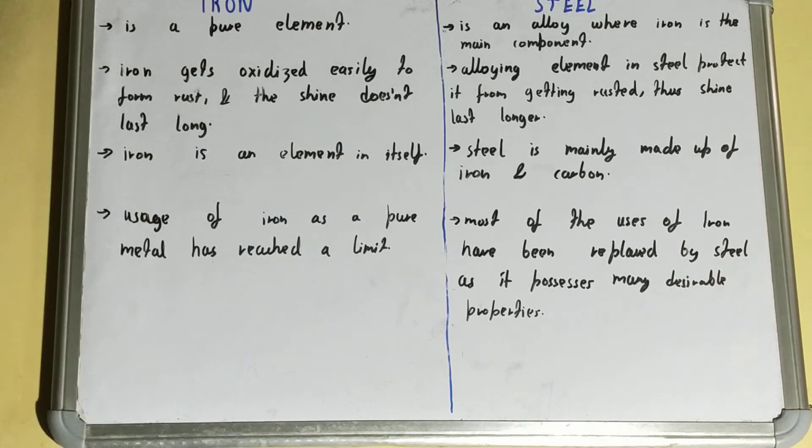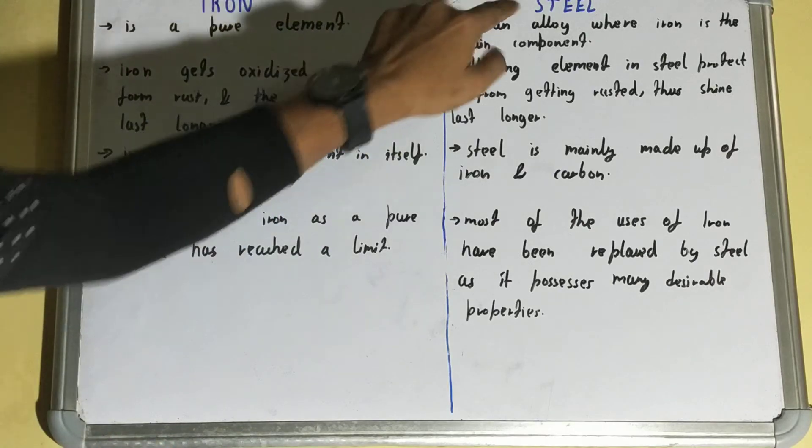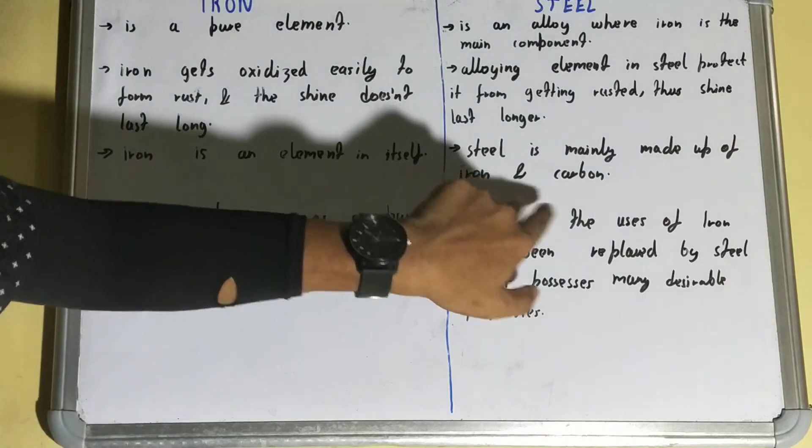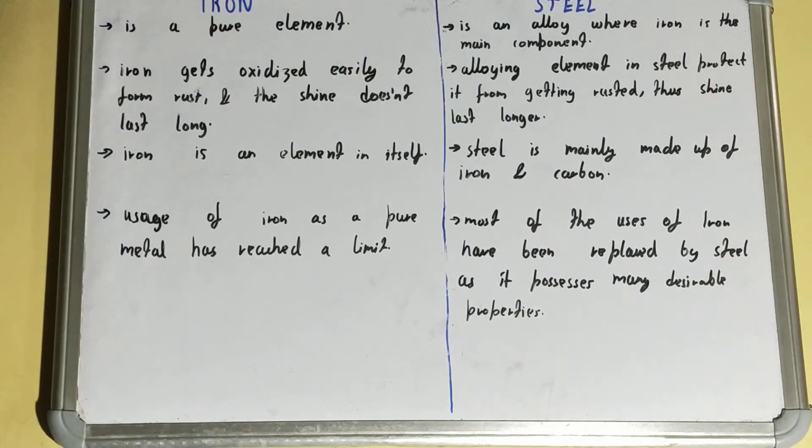Iron is a pure element, but if we talk about steel and the elements that it contains, then it mainly contains two elements: iron and carbon.